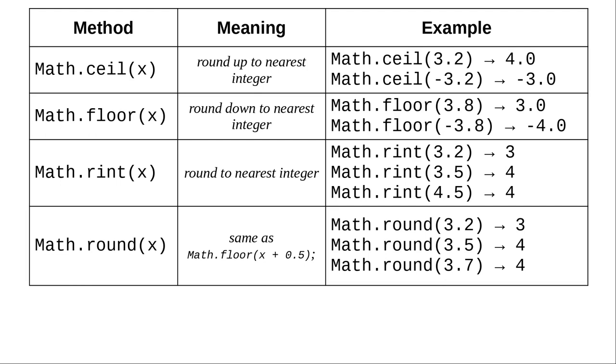Rint rounds to the nearest integer. If a number is exactly between two integers, it rounds to the nearest even integer. Half the time it'll round up, half the time it'll round down, and it'll all average out.